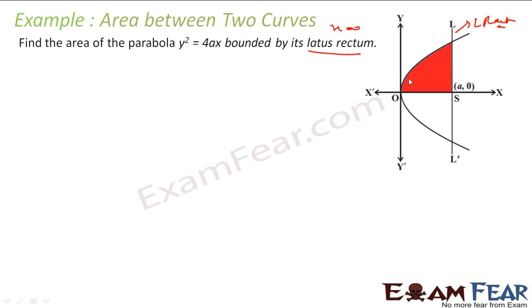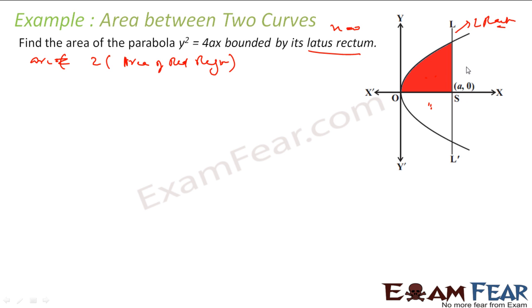The question is to find the area of parabola y² = 4x between this curve and the latus rectum line. The total area is 2 times the area of one half-region, because these two areas are symmetrical. If I find the area of one half and multiply by 2, I get the whole area. This is 2 times the integral of y dx, where x varies from 0 to a.